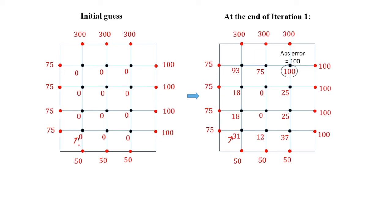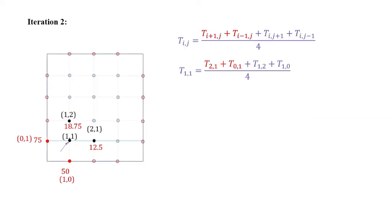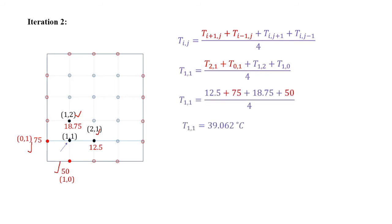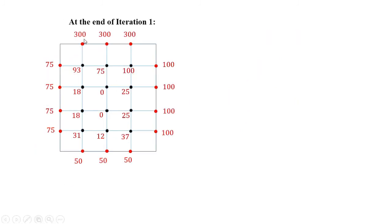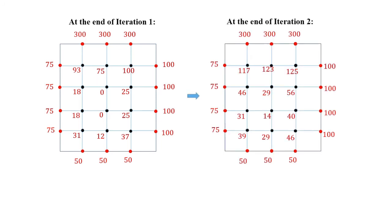Let us move to the second iteration. For all iterations we start with some initial guess value — the temperature values obtained at the end of the first iteration serve as the initial guess for the second iteration. Starting with node (1,1), the boundary node temperatures remain the same. The only difference is that T_21 and T_12 are now taken from iteration 1. Using these values, T_11 equals 39.062 degrees Celsius. Performing such calculations for all intermediate nodes gives the temperature distribution for iteration 2. The maximum absolute approximate error is now 48.